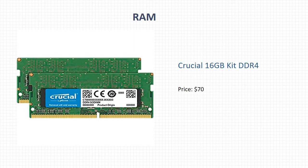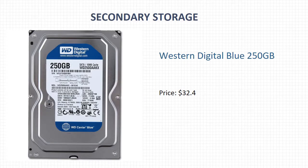The third important component is RAM. I chose the Crucial 16 Gigabyte Kit DDR4. It is a really strong RAM with impressive processing speed and capacity, doubled capacity, as well as increased energy efficiency, and its price is $70.